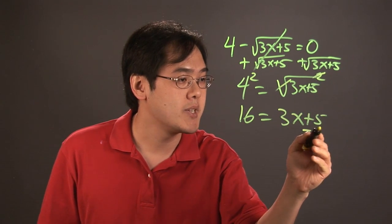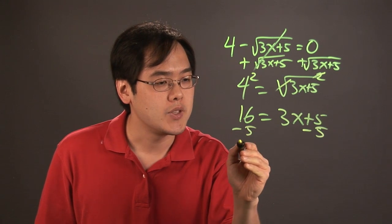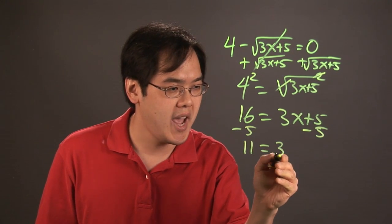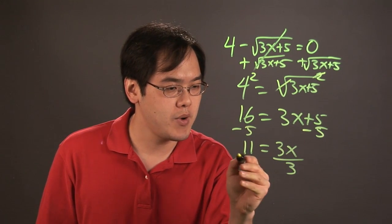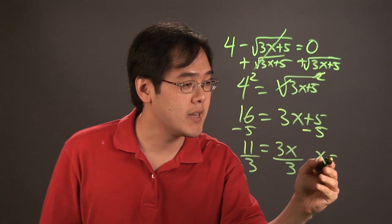And you solve for x, subtract 5. So you have 11 equals 3x. And then divide both sides by 3. And so x is going to give you 11 thirds.